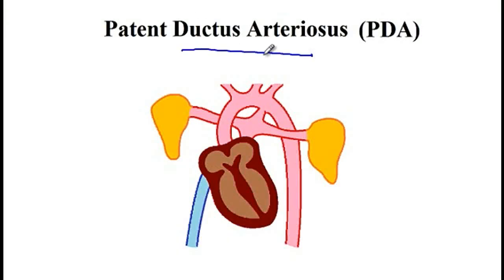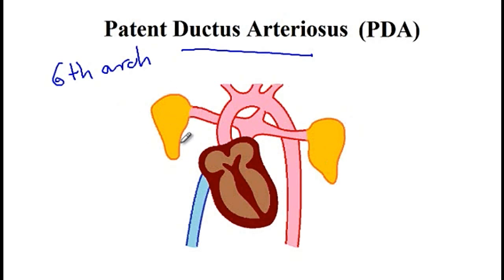The ductus arteriosus is a structure derived from the sixth branchial arch and has an important role in fetal circulation. During fetal circulation, there is too much resistance in the pulmonary vessels, so not all the blood from the right ventricle can go to the lungs. Instead, some blood is diverted from the pulmonary trunk into the descending aorta through the ductus arteriosus.